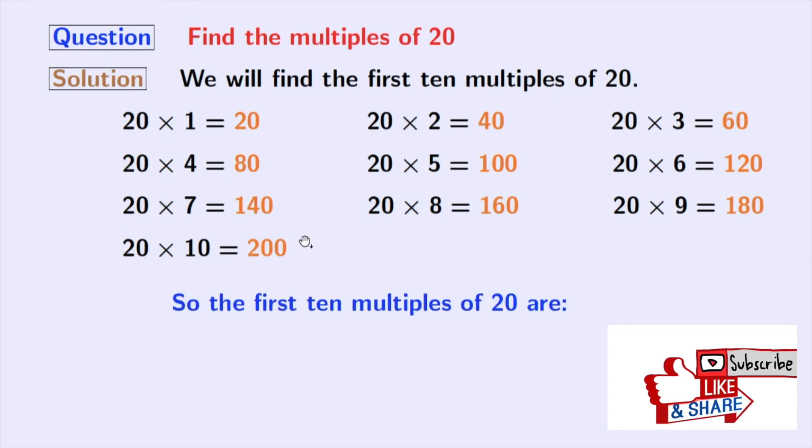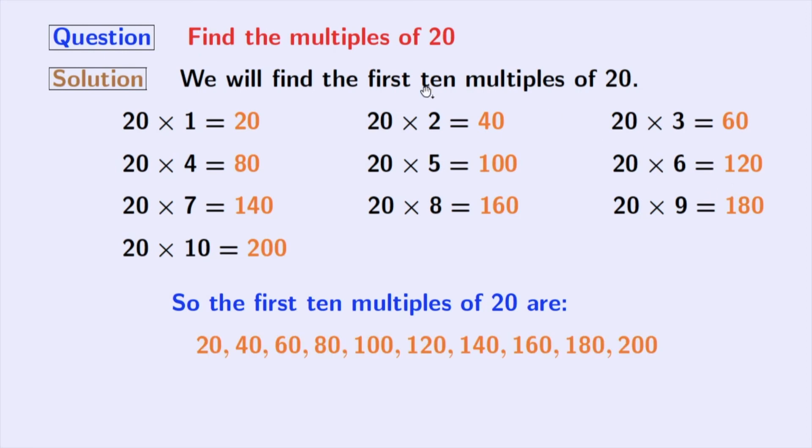So here are the first 10 multiples of 20, which are the orange ones. So these are 20, 40, 60, 80, 100, 120, 140, 160, 180, and 200.